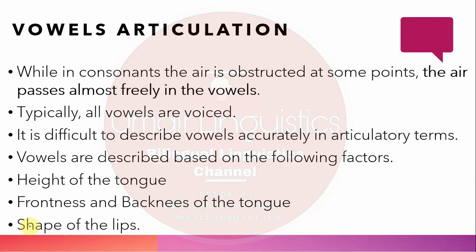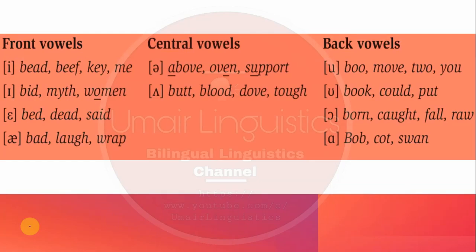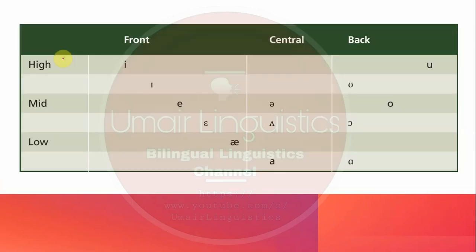We also look at the shape of the lips when describing vowels. For example, if you say 'heed', your lips will be spread, but if you say 'boot', your lips will be rounded. Based on the height of the tongue and whether the tongue moves backward or forward, we describe vowels as front vowels, central vowels, and back vowels.